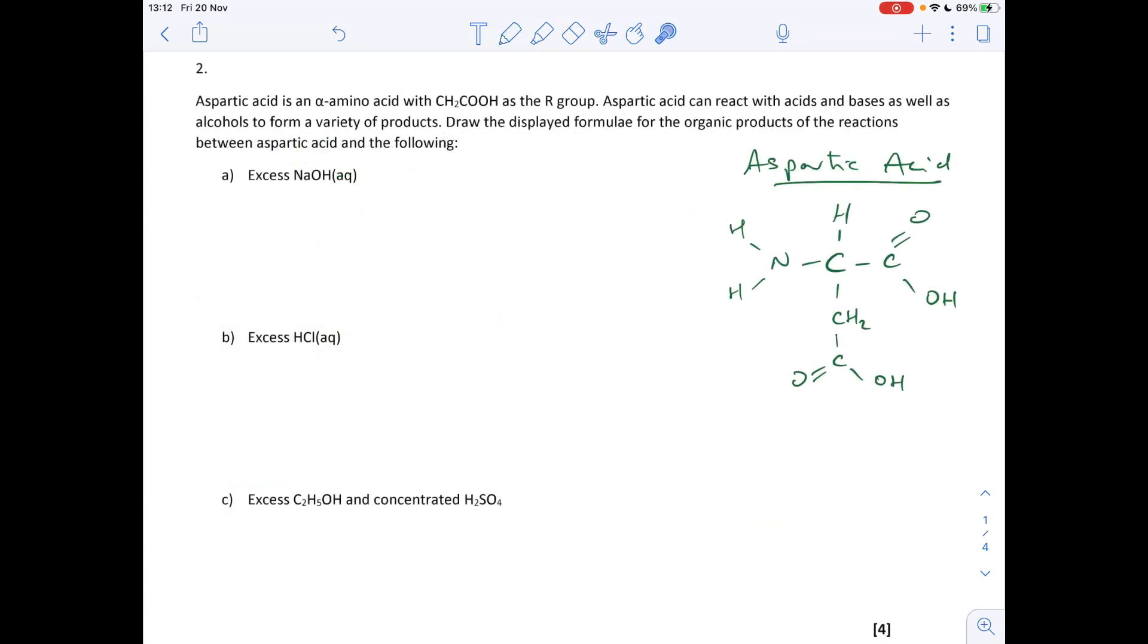Question two, aspartic acid I've drawn up there. We've got to come up with the products of the reactions between excess sodium hydroxide, excess hydrochloric acid and excess ethanol with concentrated H2SO4. Part A, which part of the molecule can react with sodium hydroxide? It's the carboxylic acid, so the OH turns into O-Na+. You don't actually need these charges by the way, but I always show them.